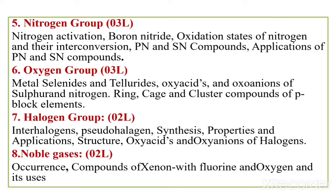Chapter 6: Oxygen Group. Three lectures. We discuss metal selenides and tellurides, oxy acids and oxoanions of sulfur and nitrogen, and ring, cage, and cluster compounds of p-block elements.